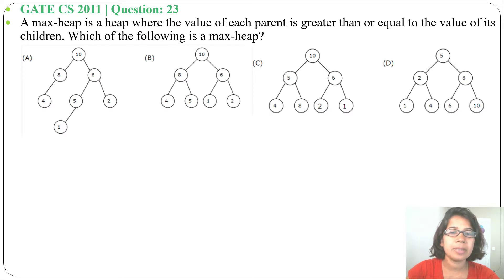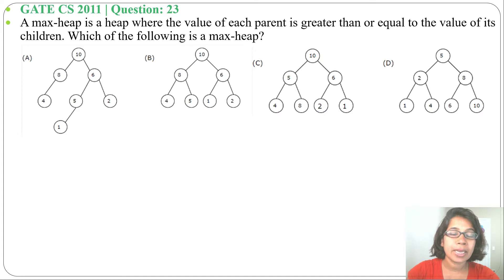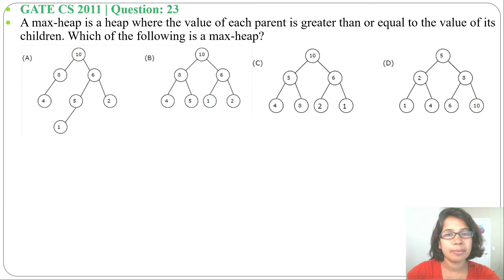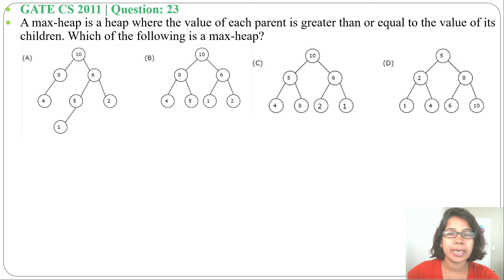For a max-heap, it should satisfy two properties: the shape property and the parental dominance property. The shape property means it should be a complete binary tree — every level should be full except the last level, which can be filled from left to right with the right side possibly empty. For parental dominance, the parent value should be greater than or equal to its children.